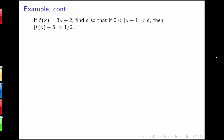So here's the statement of our problem. If f of x equals 3x plus 2, we want to find delta so that if 0 is less than the absolute value of x minus 1, which is less than delta, then the absolute value of f of x minus 5 will be less than 1/2. Since the absolute value is always greater than or equal to 0, and if I want to exclude the case where x equals 1, I'm saying it's strictly greater than 0 but less than delta. In words: if the distance between x and 1 is less than delta, then the distance between f of x and 5 will be less than 1/2.